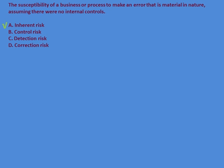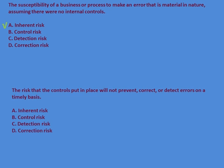Control risk means the risk that even though controls are in place, they are not effective. Detection risk is the risk where the auditor failed to identify a material misstatement in the financial statement. One more question: the risk that controls put in place will not prevent, correct, or detect errors on a timely basis — this is control risk.